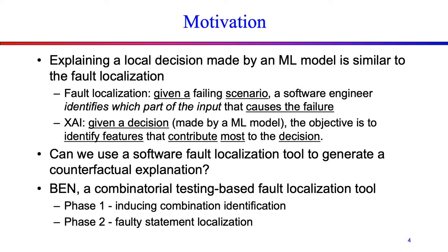Deriving a local explanation for a decision made by an ML model is similar to the fault localization problem in software engineering. In software fault localization, given a failure scenario, a software developer identifies which part of the input causes the failure. Similarly, in XAI, given a decision made by an ML model, the objective is to identify features that cause the decision, in the sense that if these features are removed, then the decision would be different. So a natural question to ask is: can we use a fault localization tool to generate counterfactual explanations? In this work, we use Ben, a combinatorial testing based fault localization tool, to generate a local counterfactual explanation.